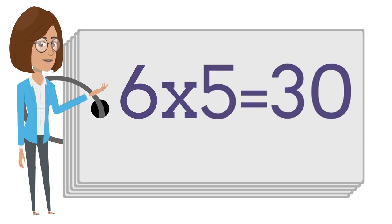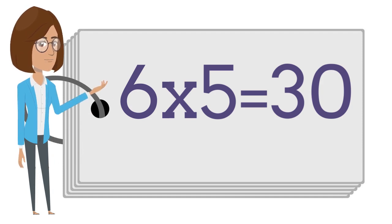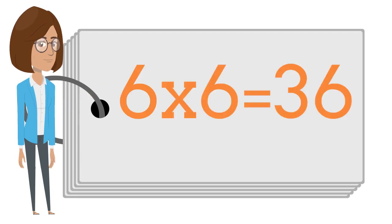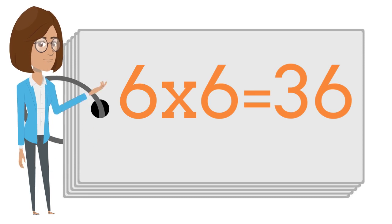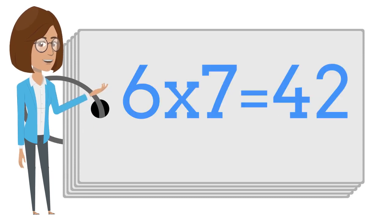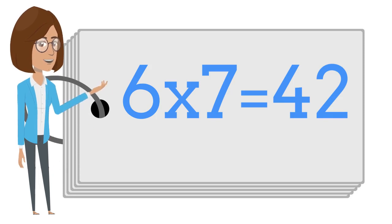Six times five is thirty. Six times six is thirty-six. Six times seven is forty-two.